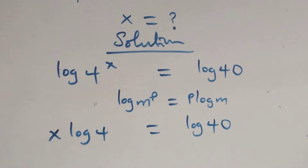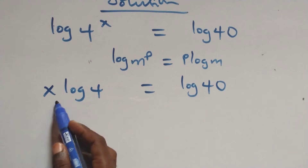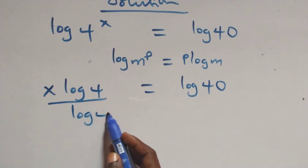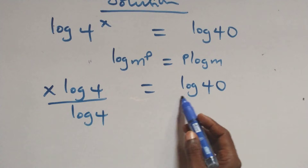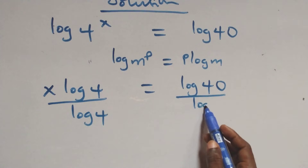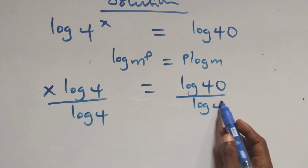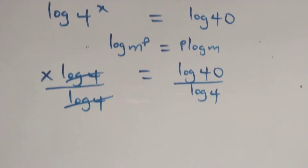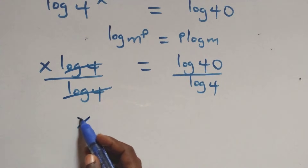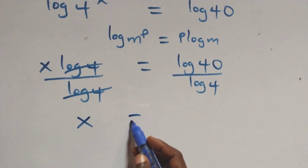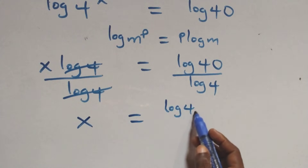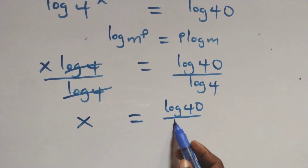Then next step here, we divide both sides by log 4. We divide this side by log 4 and also divide this side by log 4. Log 4 cancels with each other. We have x equals to log 40 over log 4.